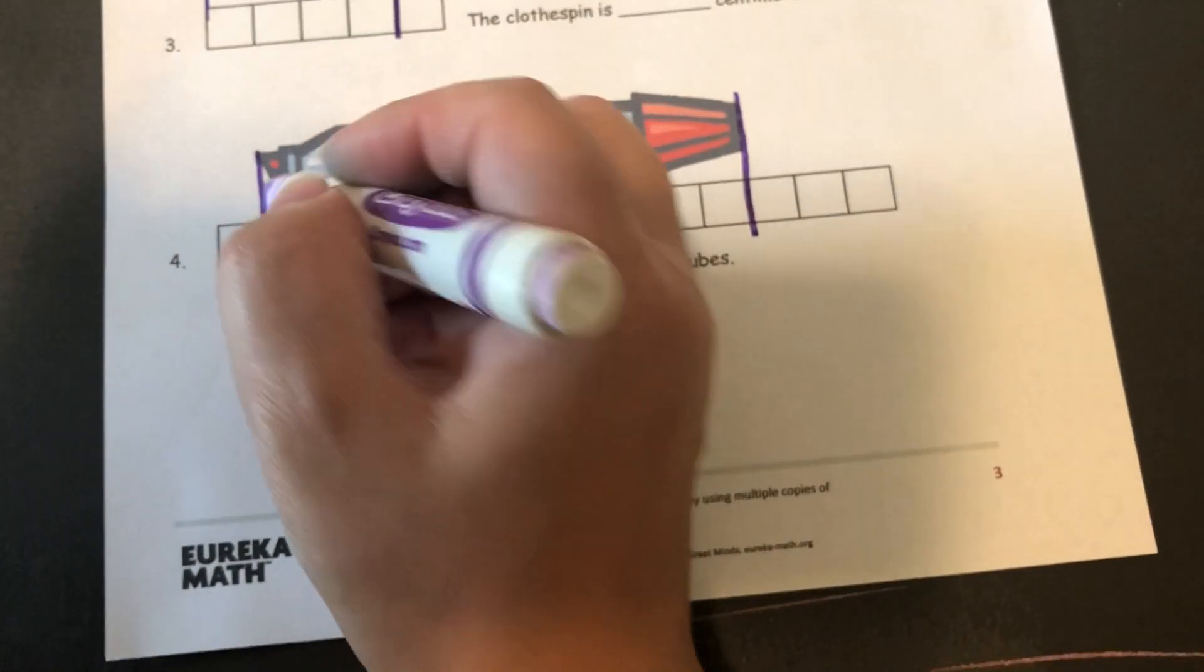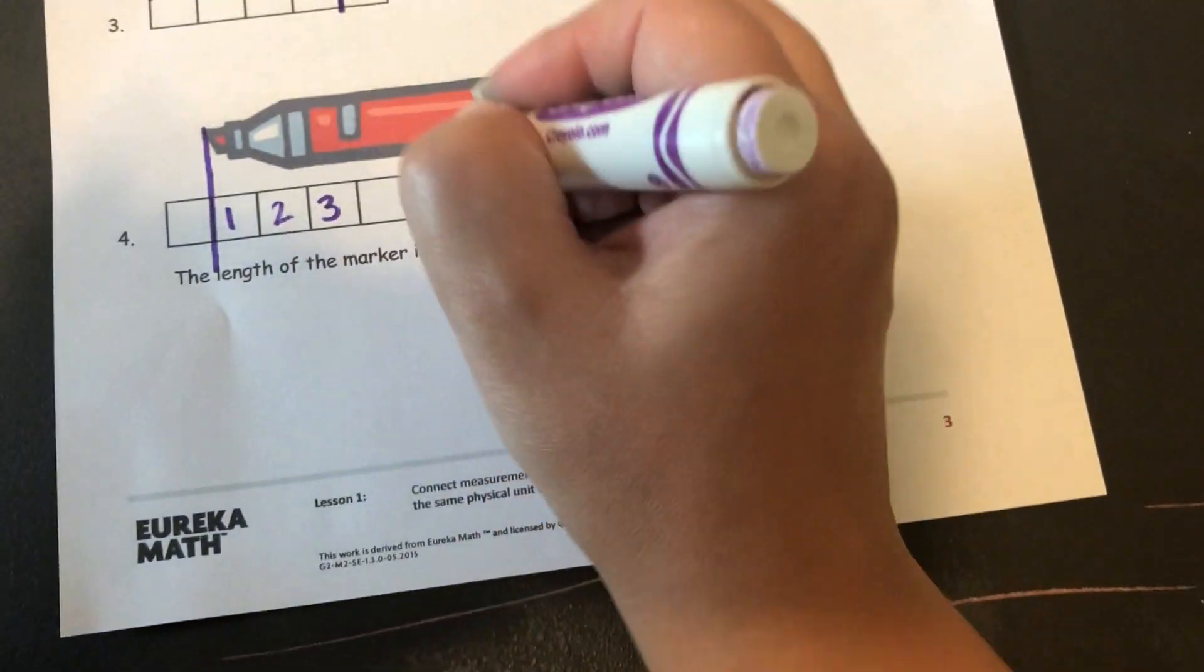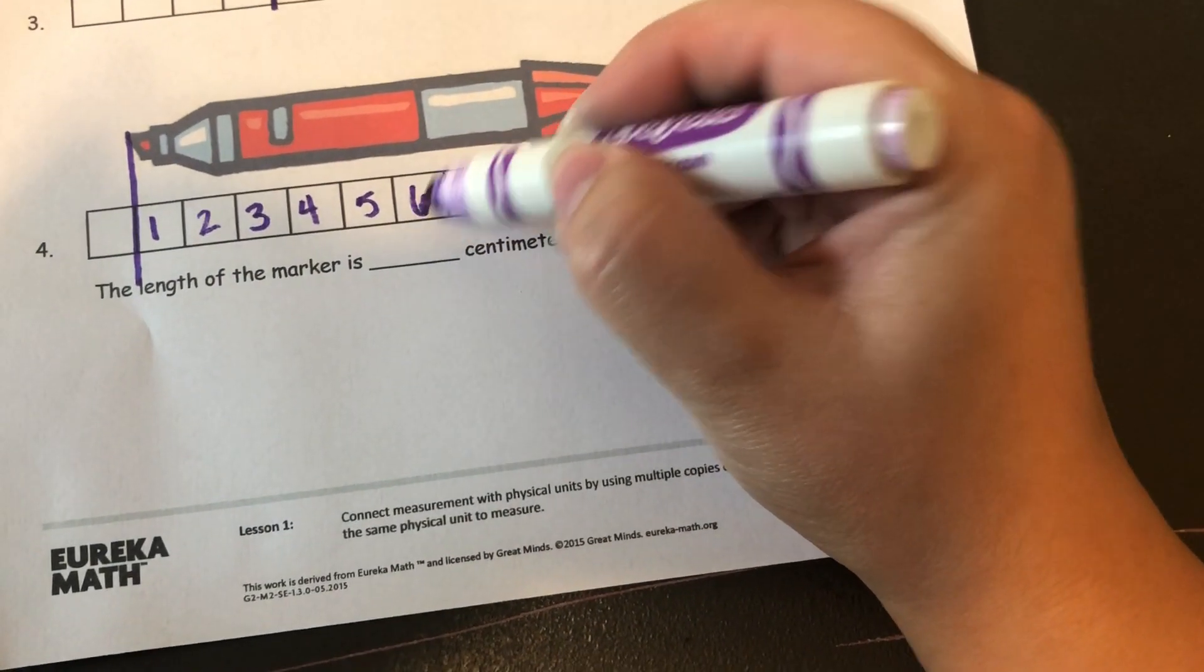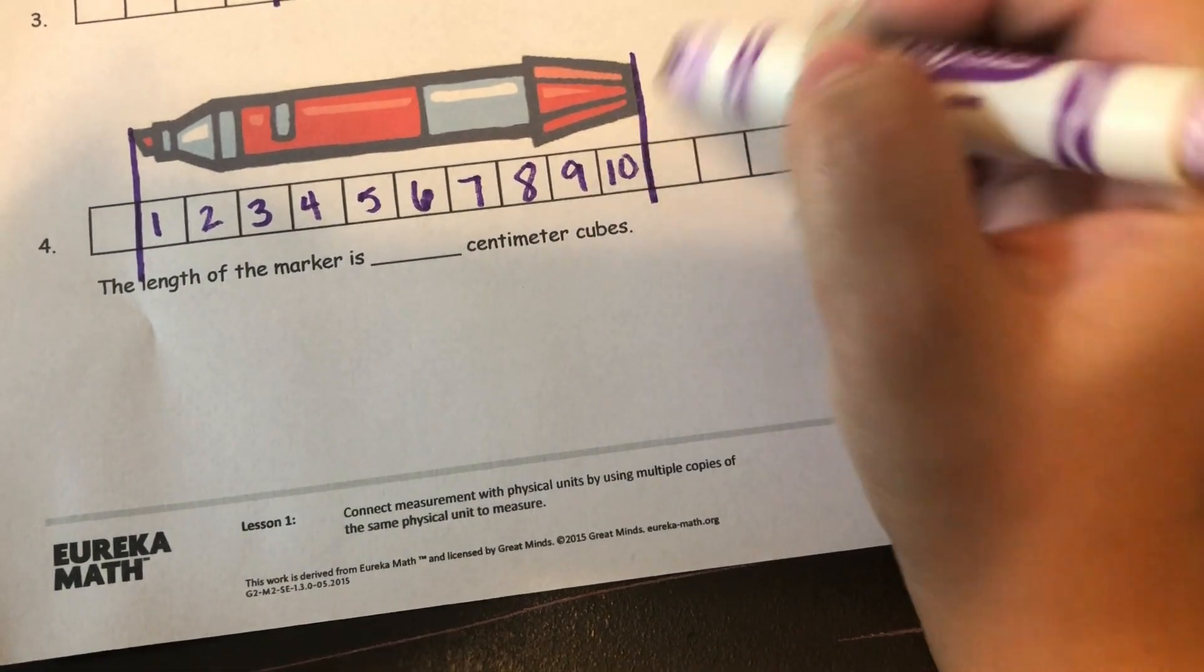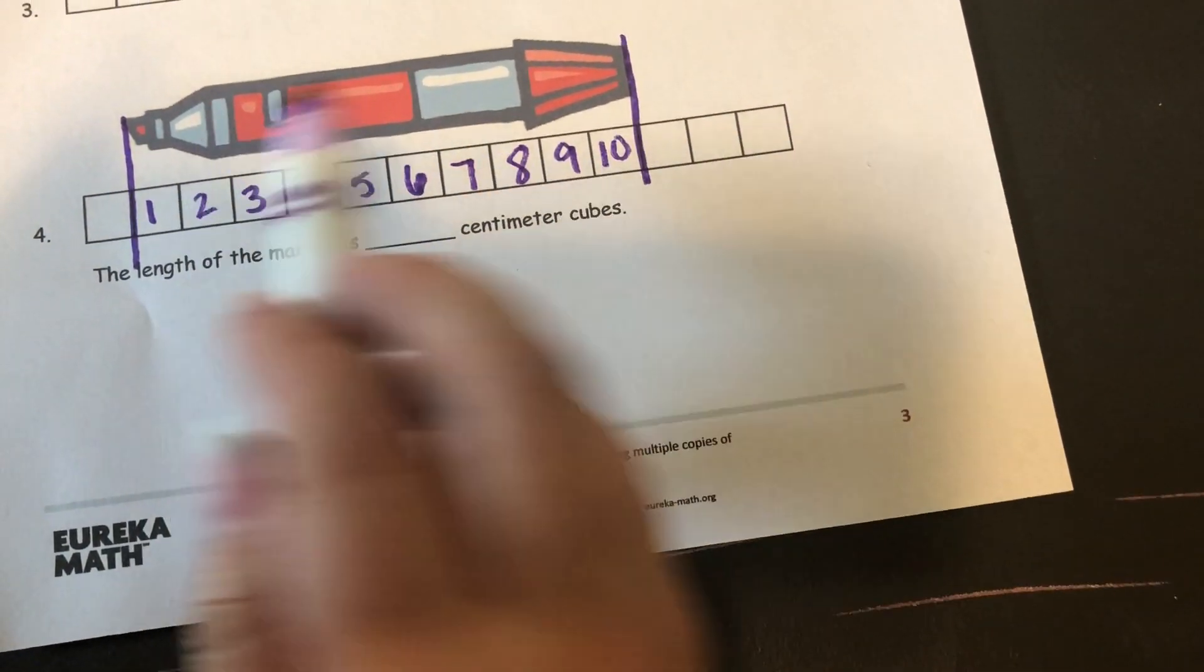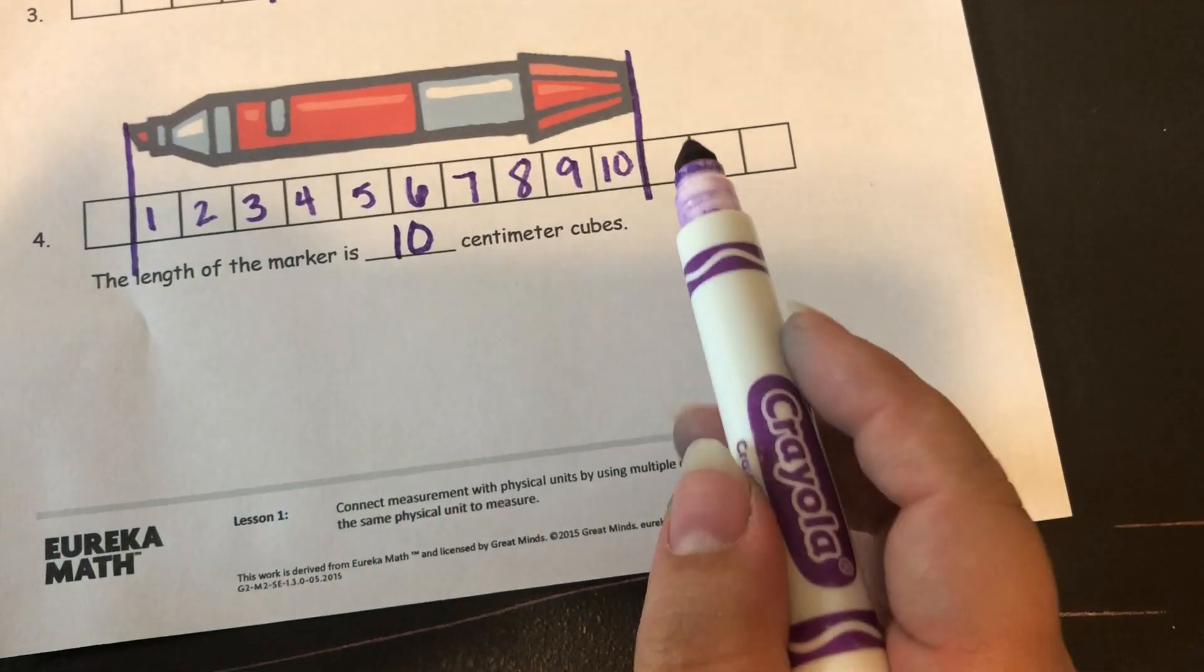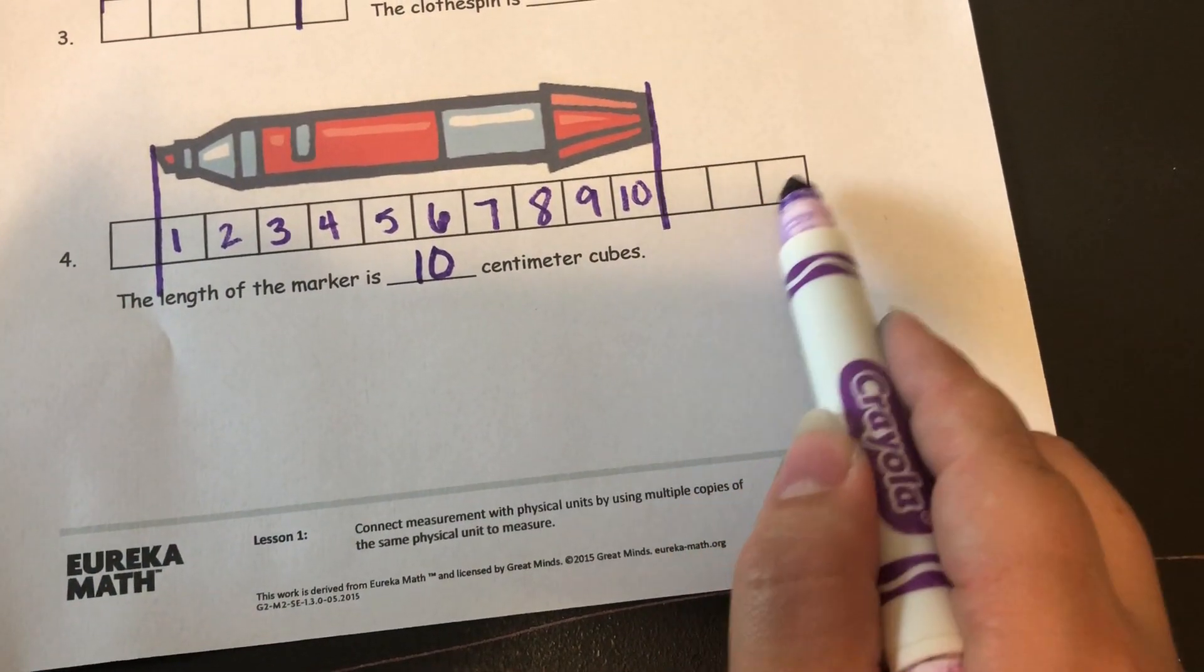This would be my first centimeter, so 1, 2, 3, 4, 5, 6, 7, 8, 9, and 10. The marker is 10 centimeter cubes long. So I didn't include this centimeter cube or any of these.